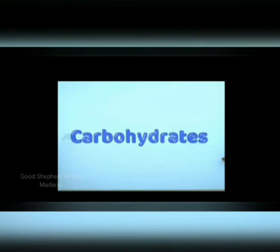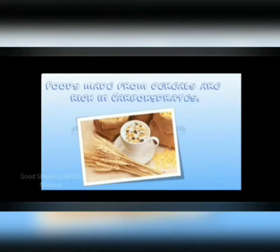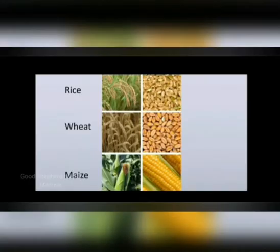First, we see carbohydrates. Foods made from cereals are rich in carbohydrates — cereals like rice, wheat, maize, millet, ragi and all have carbohydrate nutrients.